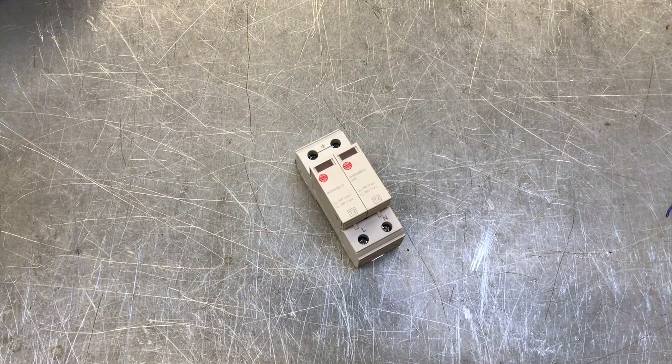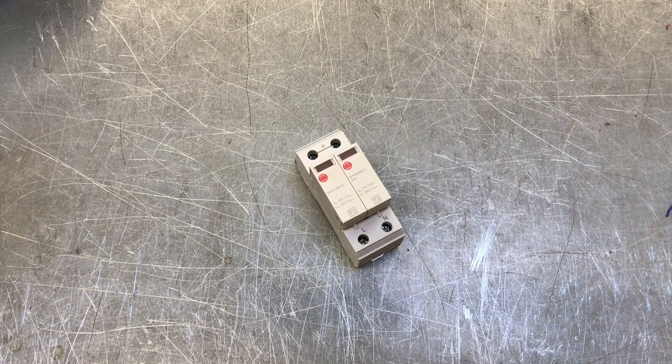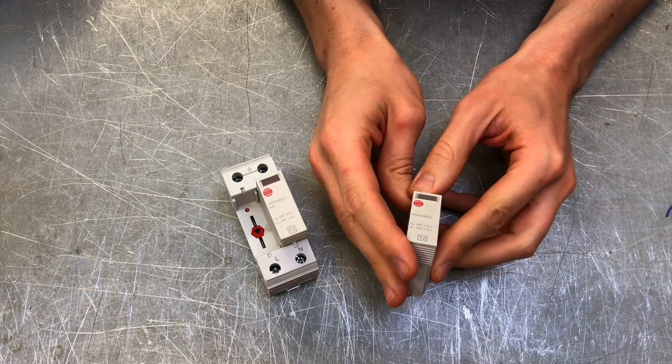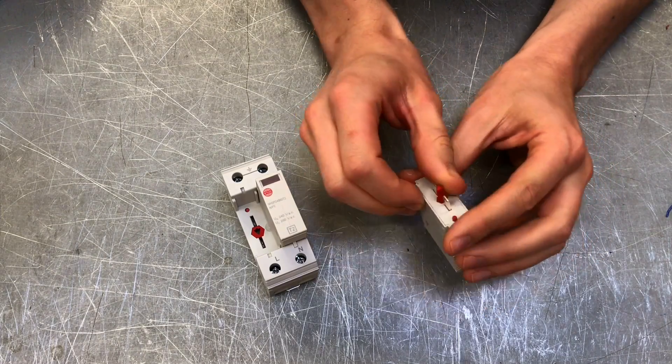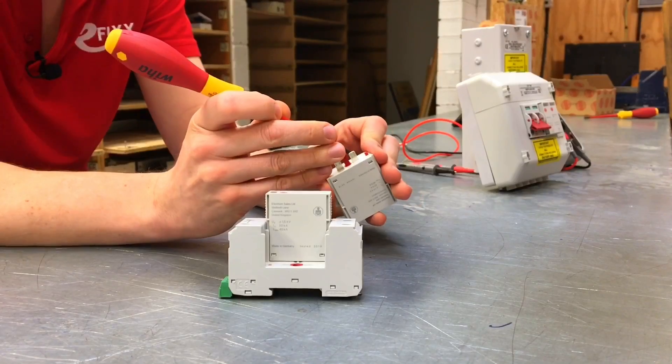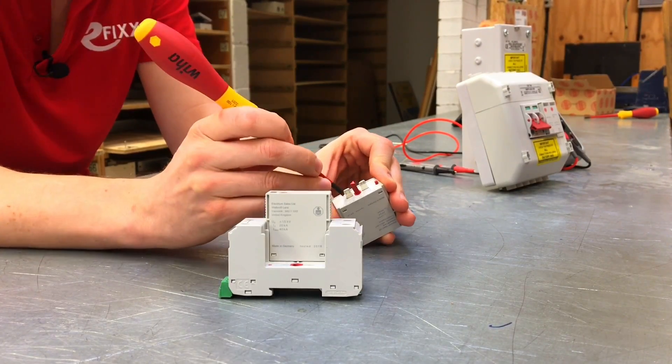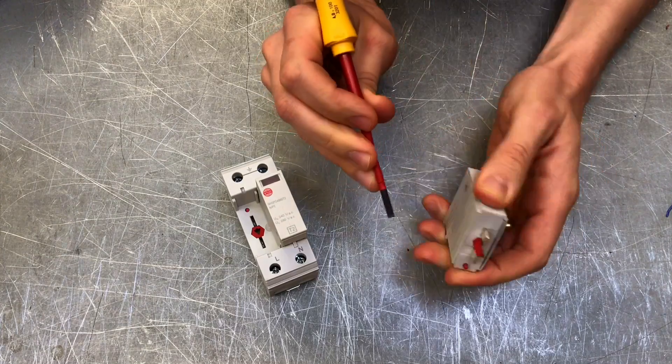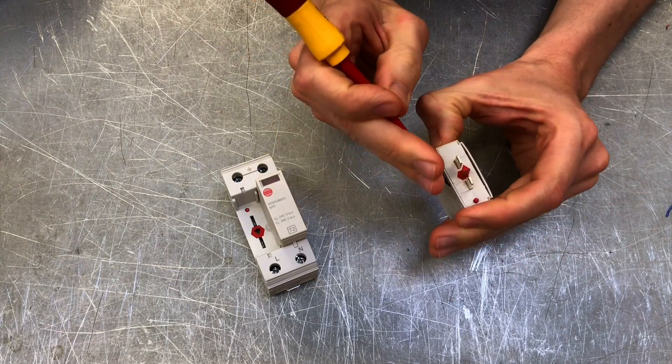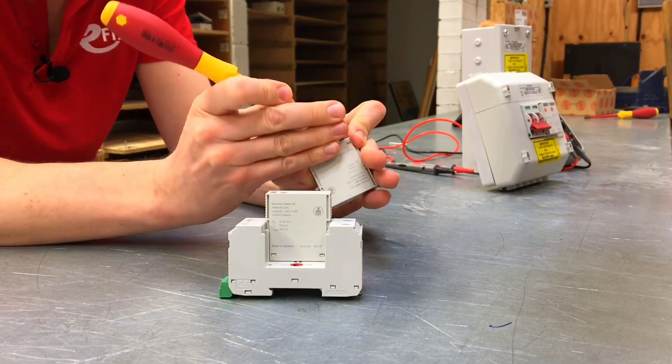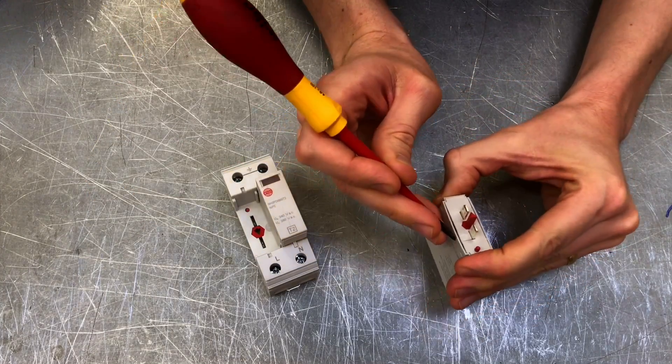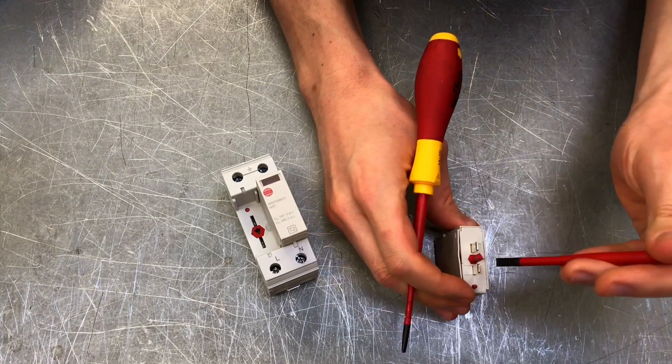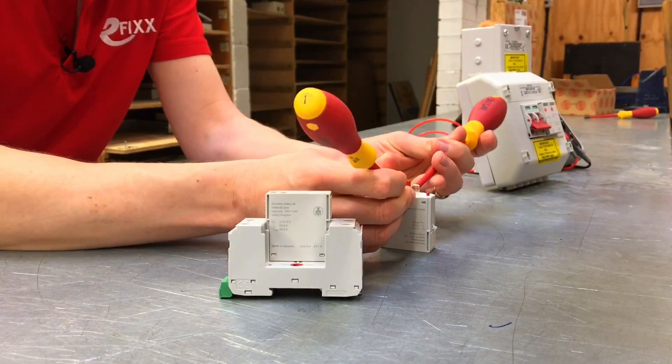We're going to attempt to open up this type 2 SPD, starting with the line conductor side. Trying to get this out of the case is a bit tricky because it's got these clips on the plastic outer that's not really designed to be undone. With a bit of jiggery pokery and insertion of a screwdriver, hopefully we'll be able to shoehorn this out. Let's try the old two screwdriver trick.